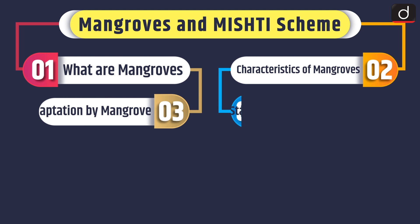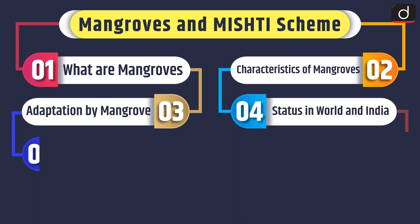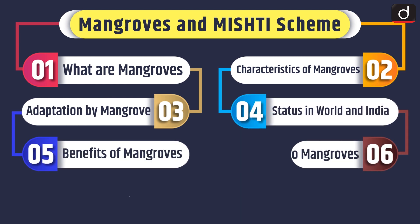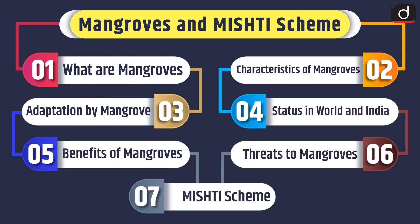Hello everyone, welcome to another series of Mind Map. Today's topic of discussion is Mangroves and MISTI Scheme. First of all, we will discuss what are mangroves, characteristics of mangroves, adaptation by mangrove, status in world and India, benefits of mangroves and threats to mangrove, and lastly, MISTI scheme.